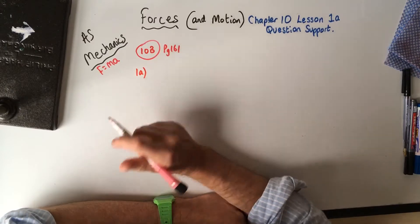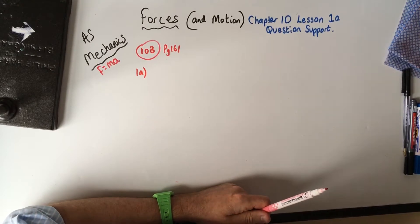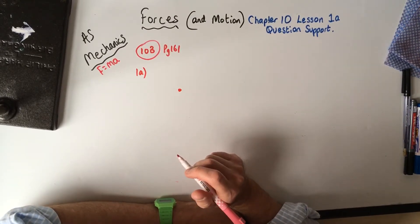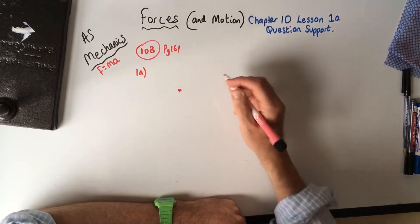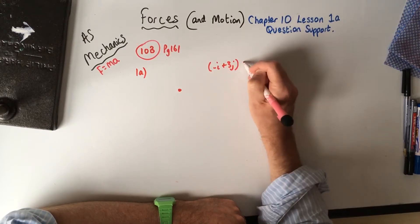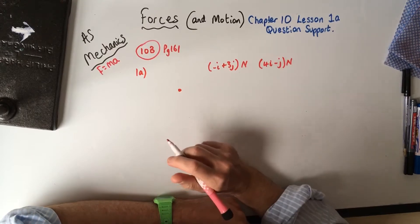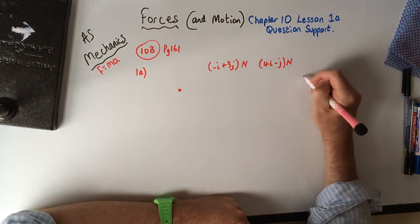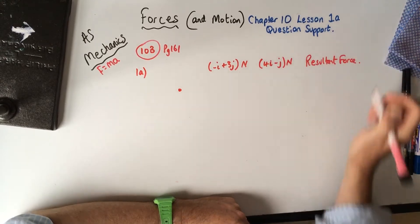From 1A, it says in each of these questions — there are four parts but I'm going to do part one — a particle is acted upon. So there's our particle; it has no mass. It's acted upon by some forces: minus i plus 3j Newtons, and also the force 4i minus j Newtons. And it says work out the resultant force.